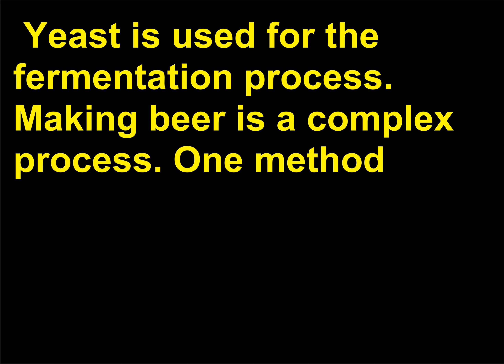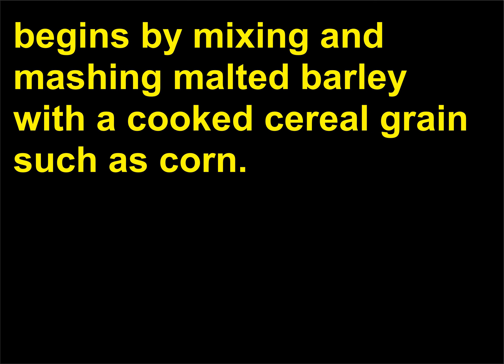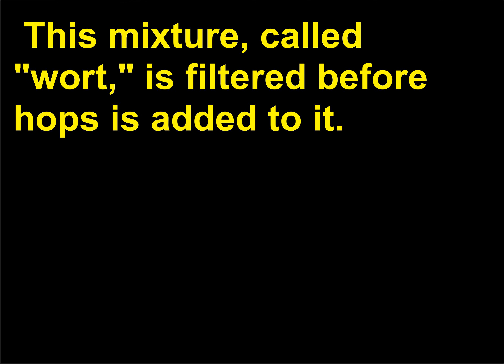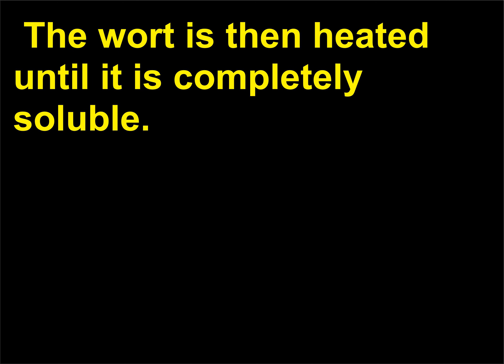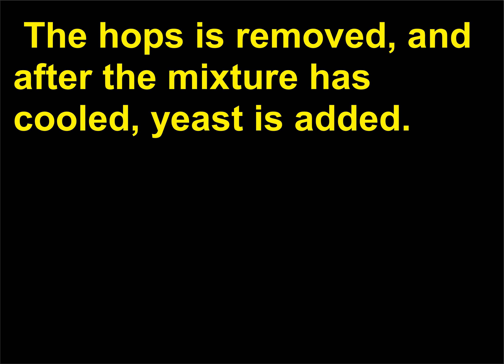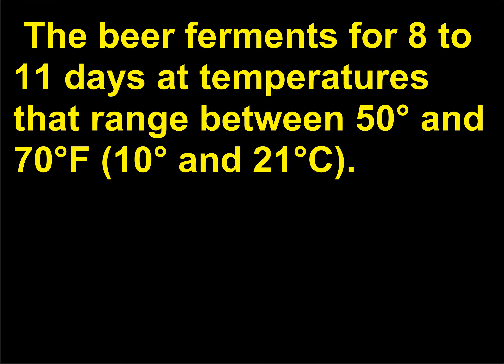Yeast is used for the fermentation process. Making beer is a complex process. One method begins by mixing and mashing malted barley with a cooked cereal grain such as corn. This mixture, called wort, is filtered before hops is added to it. The wort is then heated until it is completely soluble. The hops is removed, and after the mixture has cooled, yeast is added.